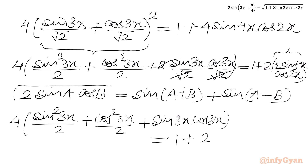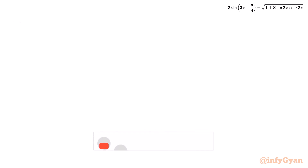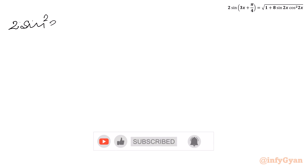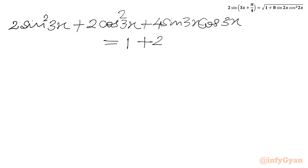Now we will apply the trigonometric identity. With A = 4x and B = 2x, I write 2 times [sin(4x + 2x) + sin(4x − 2x)], so that gives sin 6x plus sin 2x. Expanding the LHS further: it becomes 2 sin² 3x plus 2 cos² 3x plus 4 sin 3x cos 3x. RHS is 1 plus 2 sin 6x plus 2 sin 2x.